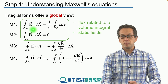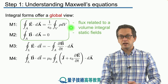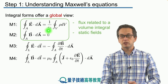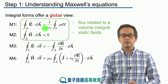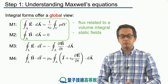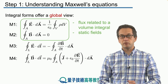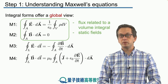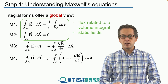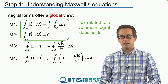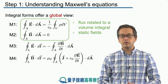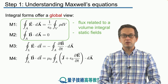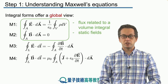In particular, it's given by this term here: the total charge of that volume divided by epsilon naught, which is the permittivity of free space. In the case of a magnetic field, the flux through a closed surface is always zero — much simpler.